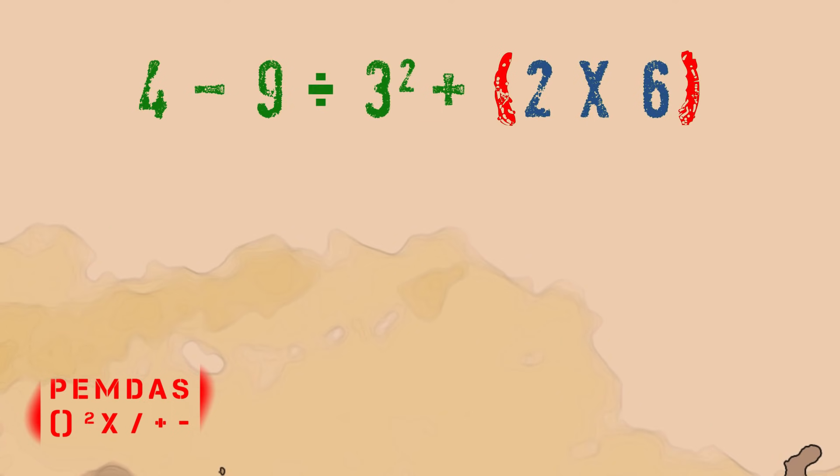Parentheses first, 2 times 6. The product's 12. Put it back in the mix. Exponents next, 3 squared is 9. When you know the tricks, it don't take much time.